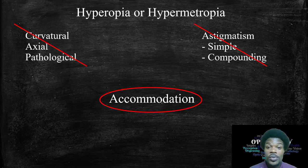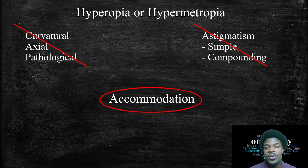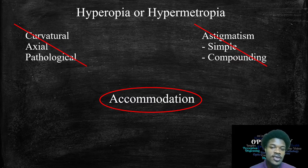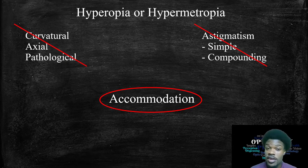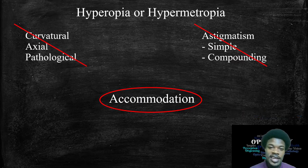In hyperopia overall, there's a lot of accommodating going on. Even at distance, if the object isn't too far away, the individual needs to accommodate for their natural hyperopia just to see it. And if there's also a near task, they must accommodate for that natural demand plus accommodate even more for the additional near task requirement.